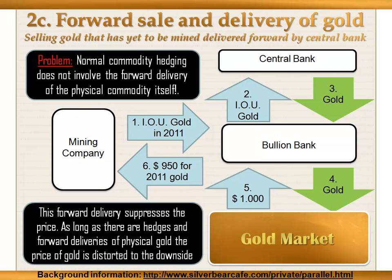The last short-selling technique with the potential of suppressing the price of gold is forward selling of unmined gold. A mining company agrees on a forward sale of gold to a bullion bank. The bullion bank promises to pay $950 an ounce and the mining company promises to deliver the gold in 2011. The bullion bank then leases gold from the central bank at a certain lease rate, promising to return it in 2011, and sells the gold to the market at the spot price of $1,000 an ounce. The bullion bank pays the central bank's lease rate and pays the mining company $950 an ounce, while the profits are invested in high-yielding bonds.